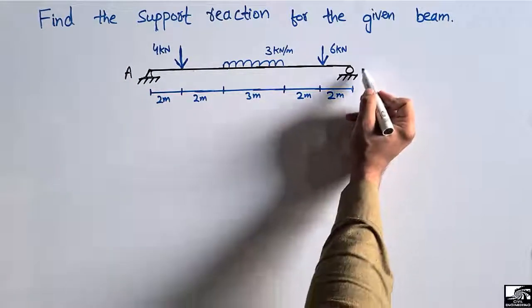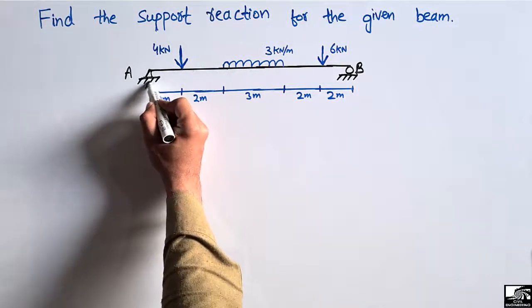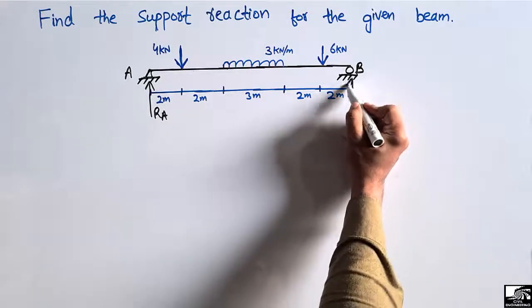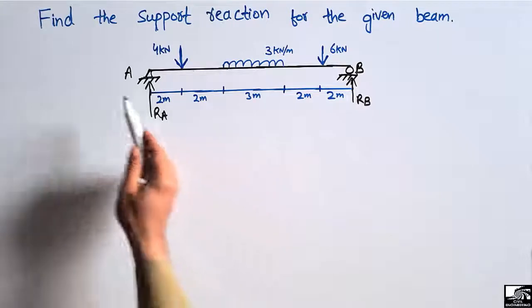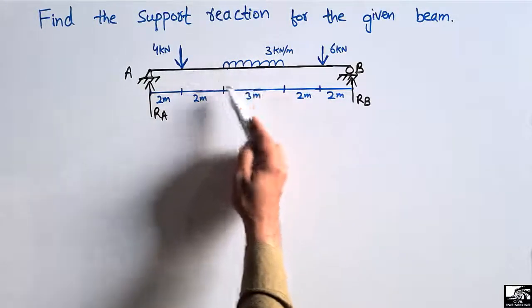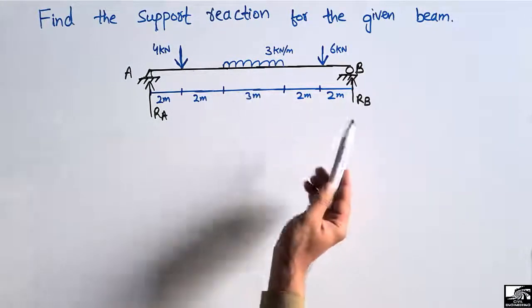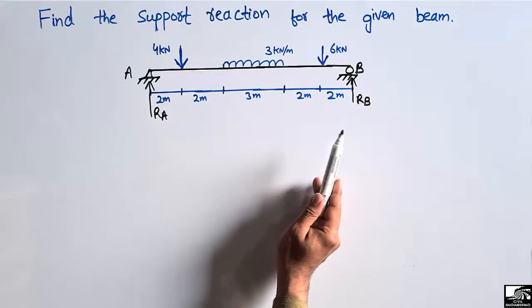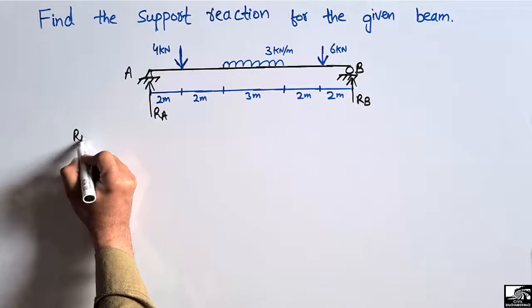Let's call this support A and this support B. We assume the reactions act in the upward direction to resist the loads. We are not taking the horizontal reaction at the hinge support because there is no horizontal load acting on this beam. We will also verify our support reactions at the end.